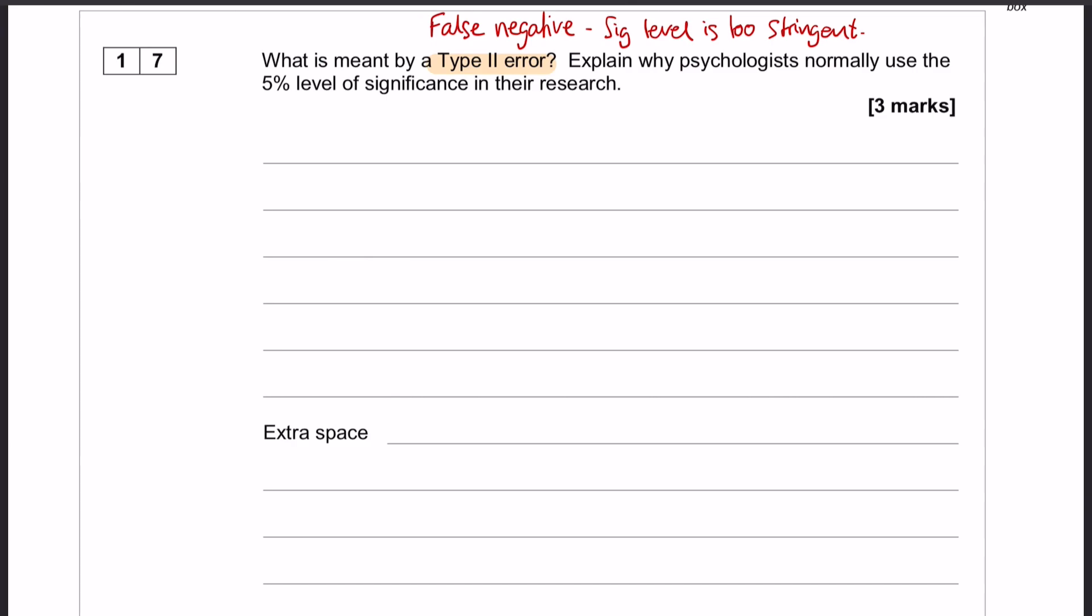A Type 2 error is a false negative. A false negative means that you have incorrectly accepted the null hypothesis when you should have rejected it, and the reason you do that is because the significance level that you have chosen is too stringent. Too stringent means too low, so you've chosen a 1% significance level for example instead of a 5% significance level.